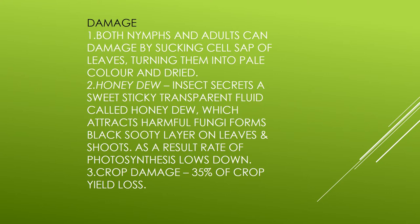The leaves will dry out. An important attractive feature is honeydew — a sweet, sticky, and transparent fluid secreted by the insect. This honeydew attracts fungus, which creates a black layer on leaves and shoots. This black layer prevents photosynthesis, as the surface becomes black or yellow instead of green, lowering the photosynthesis rate. As a result, 35% of the crop is damaged.